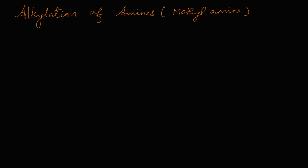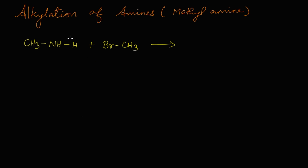Let's learn the reaction. First, let's take methylamine — that is methanamine, CH3NH2. For convenience, I am writing the NH2 as NH and H. Now we are going to react it with methyl bromide, that is CH3Br. What happens is a very simple reaction: this hydrogen from the amine and bromine from the methyl bromide...